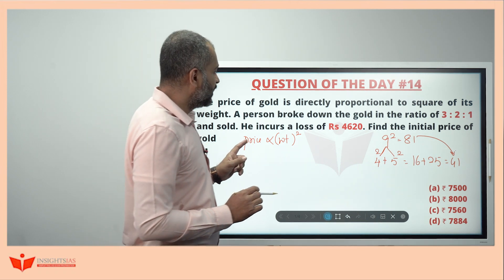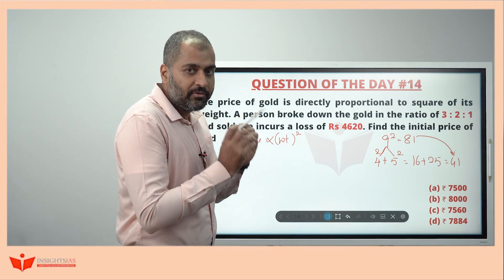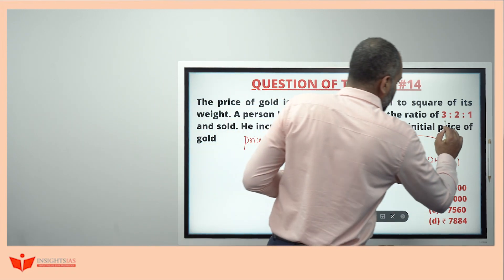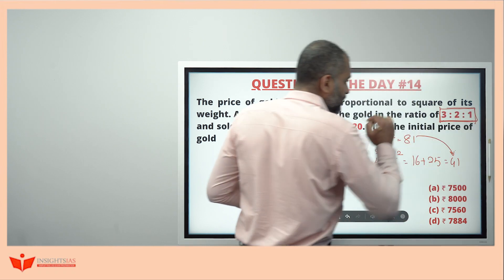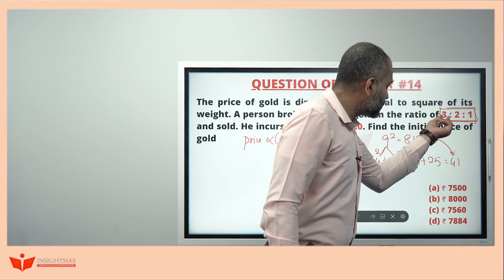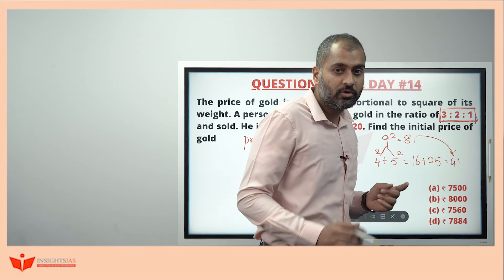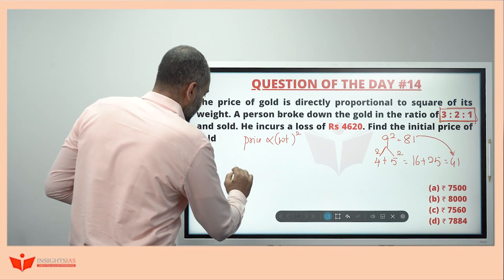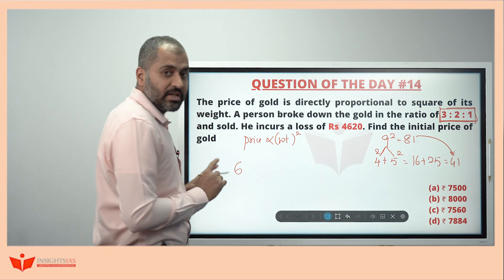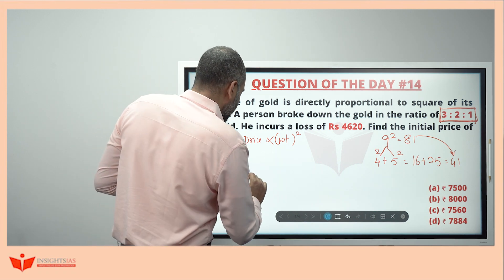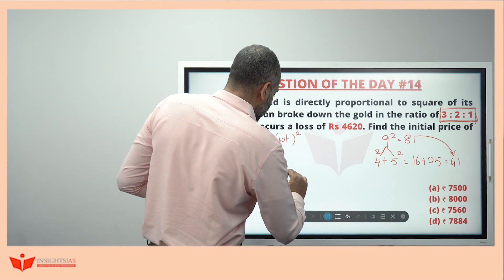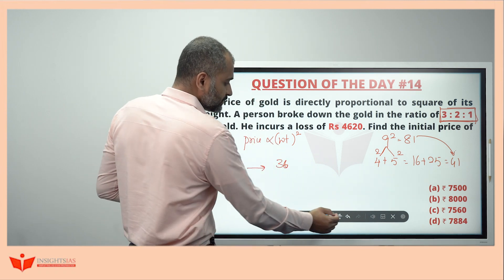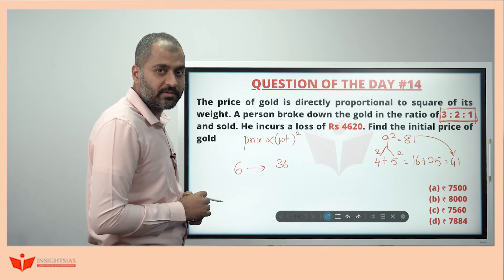Initially, the gold was intact. Afterwards, it was broken in the ratio 3:2:1. Originally, this was the total number of units of gold. 3 parts, 2 parts, 1 part. So totally 6 parts of gold was there. If 6 part is there, then the price has to be square of this weight. So the price has to be 36 units or 36 parts.